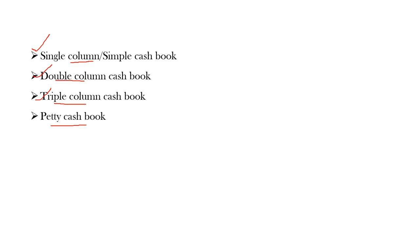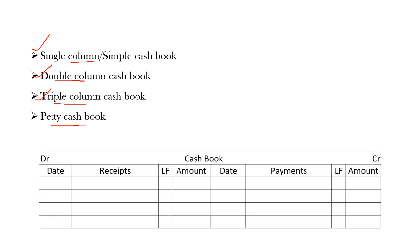Petty cash book is a cash book where petty expenses will be recorded and maintained by the cashier. Now let us see the format for the cash book. The cash book will be in the form of a ledger. We have two sides — the left-hand side is the debit side and the right-hand side is the credit side. On the left side, we will have a date column, receipts column, LF, and amount column.